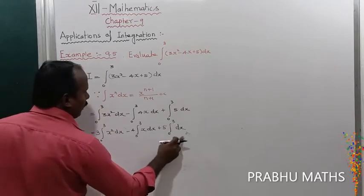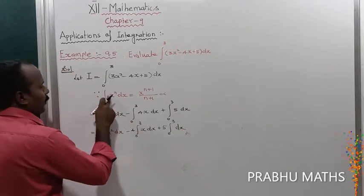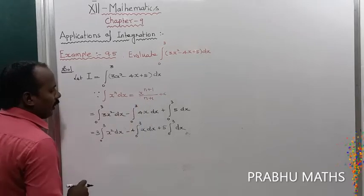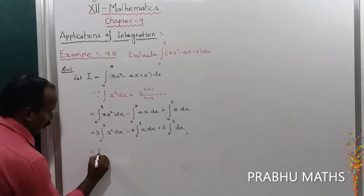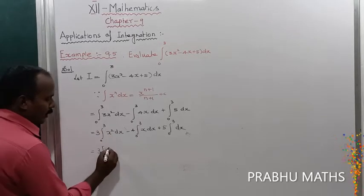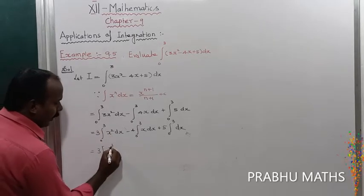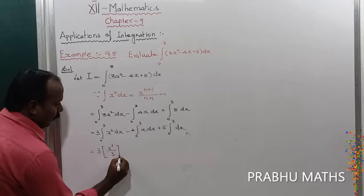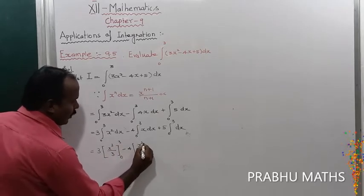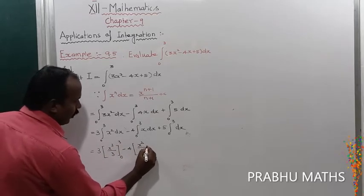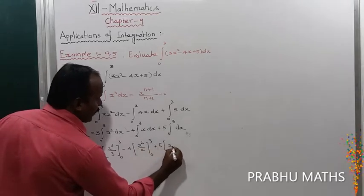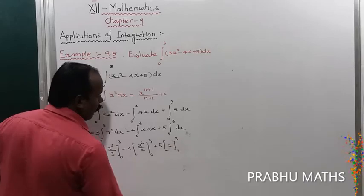By using the formula, all terms are of the form x^n dx, so that is equal to x^(n+1) divided by (n+1). That gives us: 3 times [x³/3] from 0 to 3, minus 4 times [x²/2] from 0 to 3, plus 5 times [x] from 0 to 3.